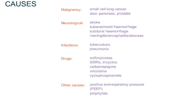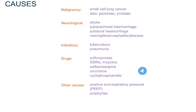SIADH has countless causes. These include malignancy, most commonly small cell lung cancer, which secretes ectopic ADH. Anything that affects the neurological system can cause disruption in ADH secretion, like stroke, subarachnoid hemorrhage, subdural hemorrhage, meningitis, encephalitis, and abscess. Infections such as TB and pneumonia are also potential causes of SIADH, as are drugs that act on the central nervous system such as antipsychotics and antiepileptics. Sulfonylureas can also increase ADH secretion.